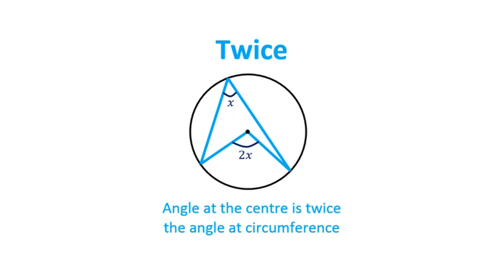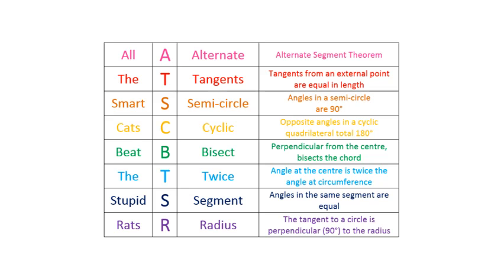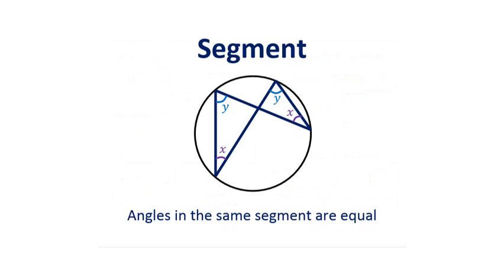Angle at the centre is twice the angle at the circumference. All the smart cats beat the stupid rats. Angles in the same segment are equal.